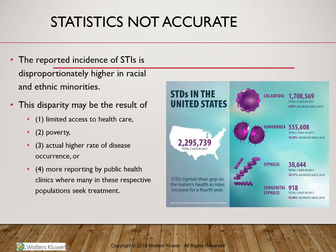To summarize, the reported incidence is not always accurate due to four elements: limited access to healthcare, poverty, actual high rates of disease occurrence, and more reporting by public health clinics.